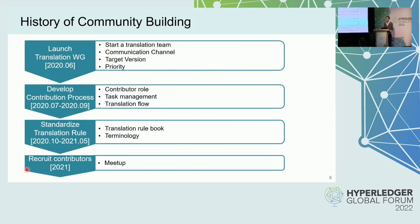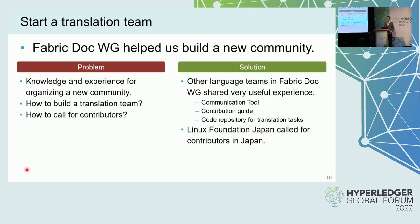This is the history of our community building: launching the translation working group, developing the contribution process, standardizing translation rules, and recruiting contributors. Starting a translation team is building a new open source community. However, we did not have knowledge or experience organizing one. Our parent group — the Hyperledger Fabric Documentation Working Group — helped us, providing communication tools and contribution guides. Hyperledger Japan also helped by calling for contributors, as they have connections with local engineers.